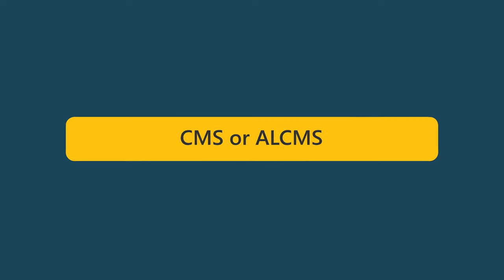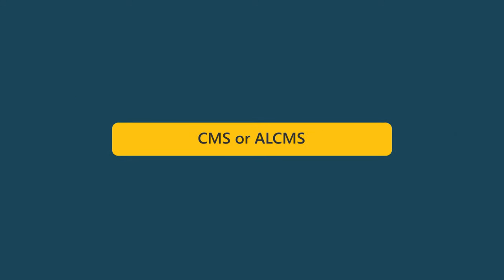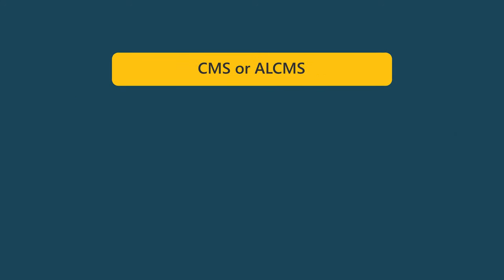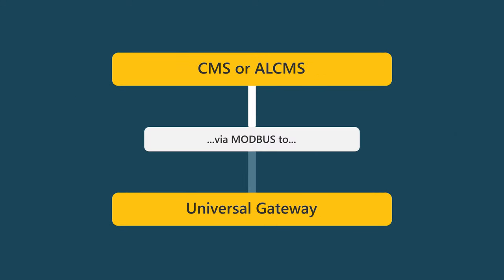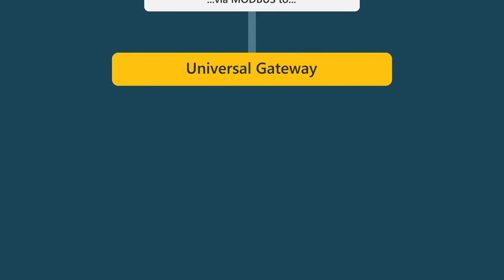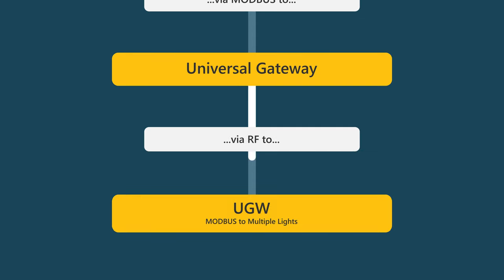The CMS or ALCMS system connects via Modbus to the Universal Gateway. This enables wireless control via RF to another Universal Gateway, which uses Modbus to control multiple lights or control and monitor the system.